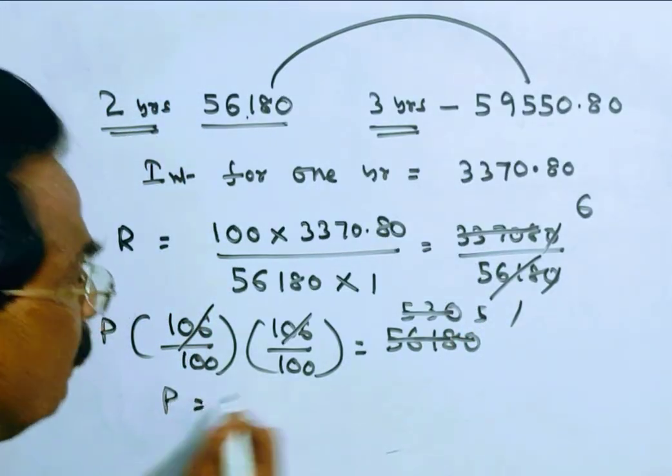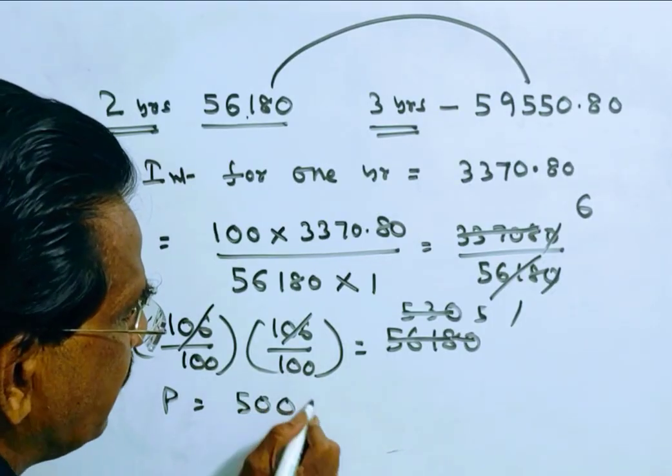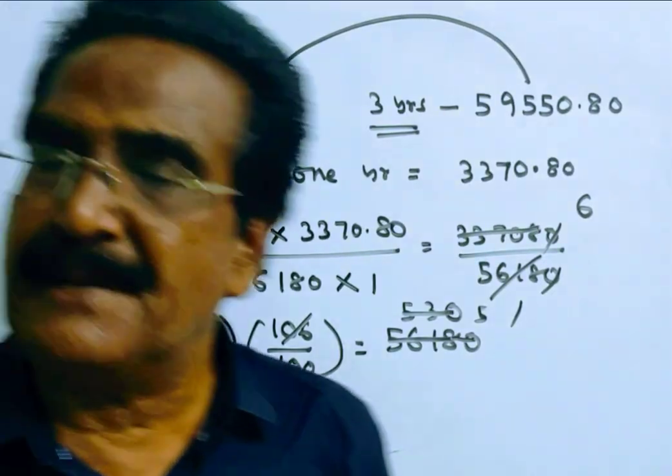So friends, principle P is equal to 5 into 10,000. 50,000 is the principle. Thank you.